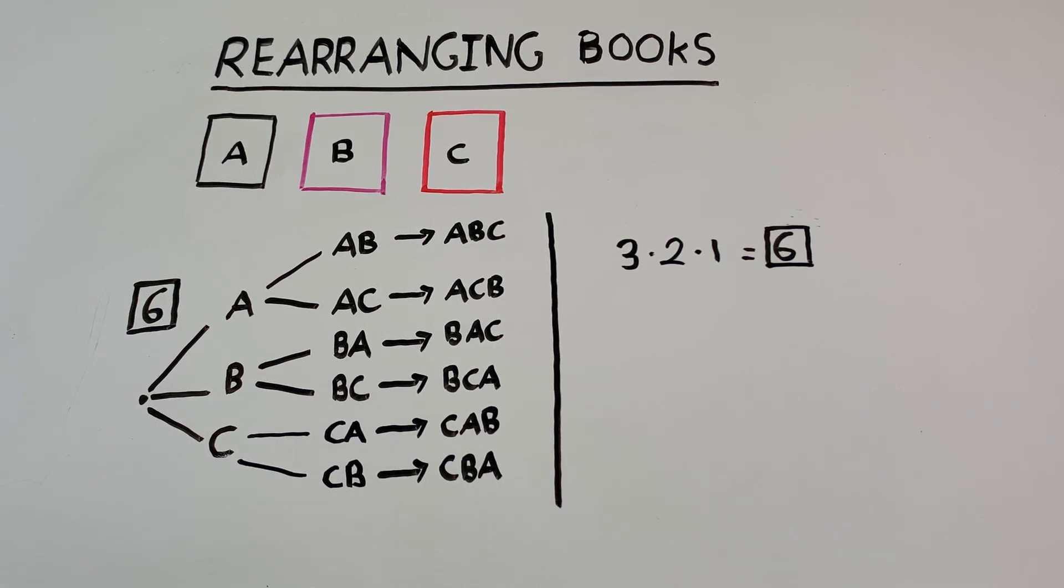But this time, we have no such thing as repeats. Once we place that first book, we have less choices for the next book. So the answer is not three times three times three. Instead, here, the answer is three times two times one. So we see that there are six total ways to rearrange three different books on a shelf.